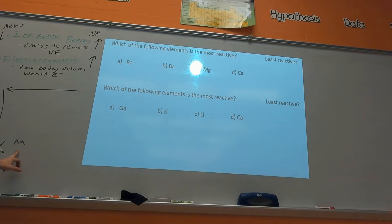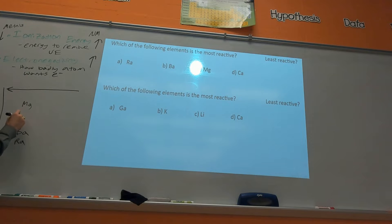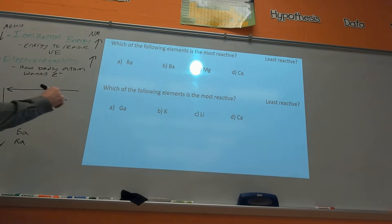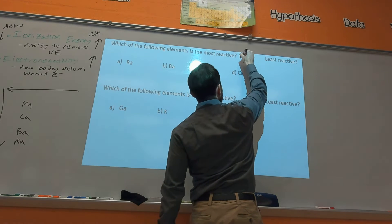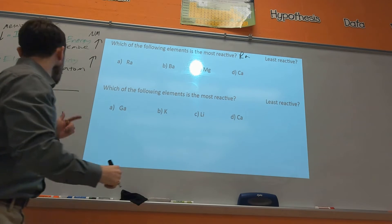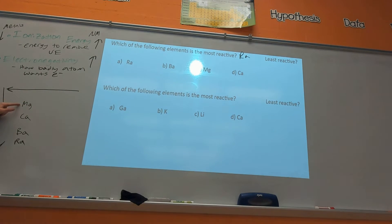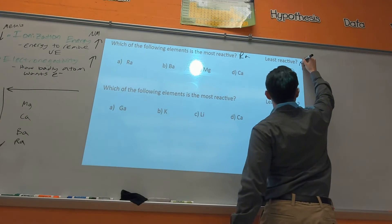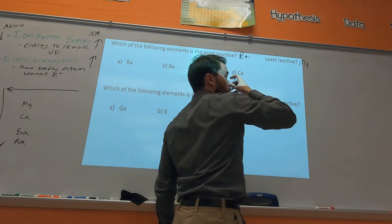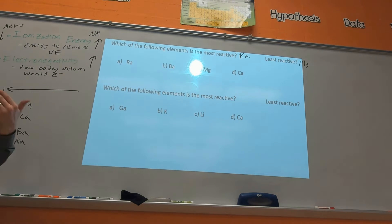Barium (Ba) is right above radium, magnesium (Mg) is up here, and calcium is right below it. Based on this, which would be the most reactive? Radium — Ra is the most reactive. And the least reactive would be the opposite, the one highest up on the table, so that would be magnesium (Mg). This stuff really isn't that bad — you just have to keep these trends straight.